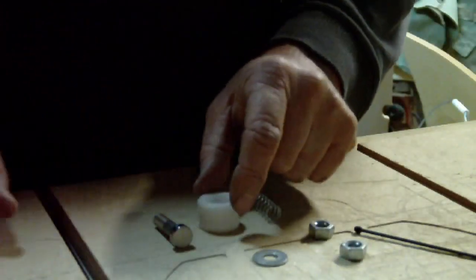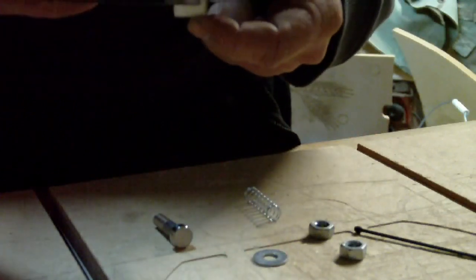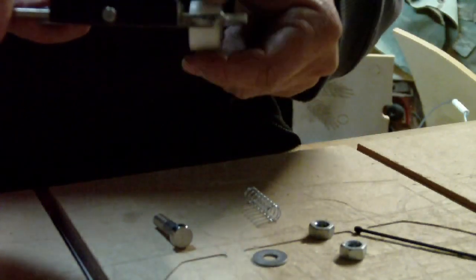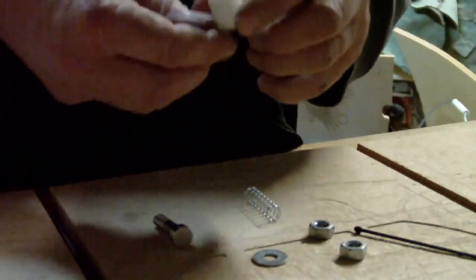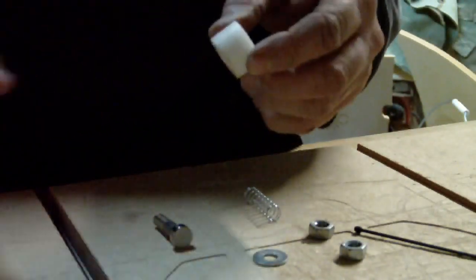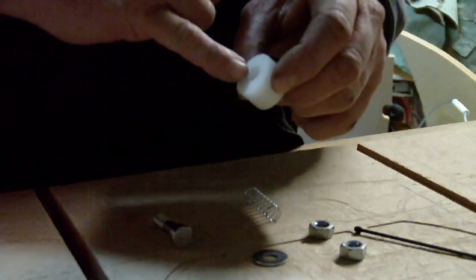The next part I made, again on a lathe, is this here. It's a piece of acetyl and it measures 16 millimeters in length here. What I did is I put this in a lathe and I ran an 8 millimeter drill through it.